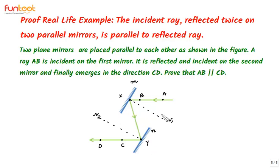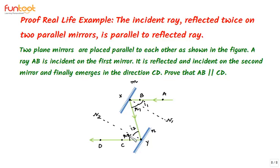Since the mirrors are parallel, their normals will also be parallel to each other. The angle of incidence I1 and angle of reflection R1 apply at mirror M — I1 is the angle the incident ray makes with the normal, and R1 is the angle the reflected ray makes with the normal. For mirror N, the angle of incidence is I2 and the angle of reflection is R2. By the laws of reflection, I1 equals R1 and I2 equals R2.